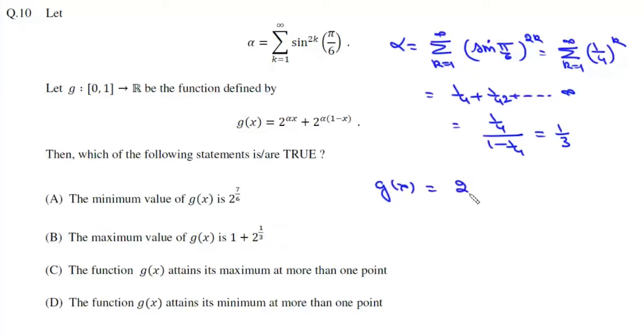So we get our function g(x) as 2 to the power x by 3 plus 2 to the power 1 minus x by 3. Now we have to find minima and maxima of this function in the interval 0 to 1.